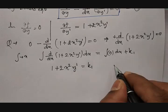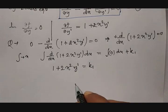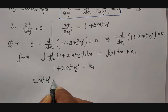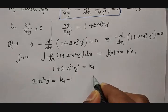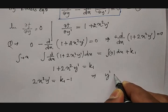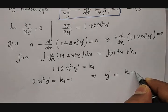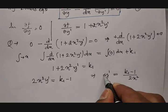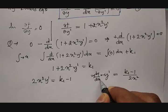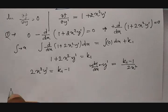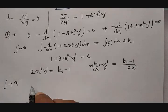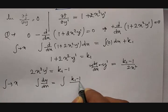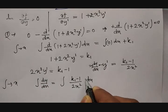From here we need to find the value of y'. Taking 1 to the other side: 2x²y' equals k1 minus 1. Therefore y' equals (k1 minus 1) divided by 2x². And since y' is nothing but dy/dx, we apply integration with respect to x: integration of dy/dx dx equals integration of (k1 minus 1) divided by 2x² with respect to x.